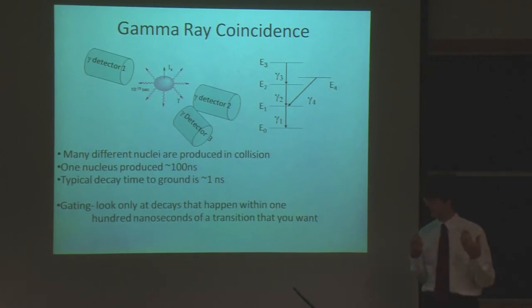What we do is something called gating. So if we look only at a decay that happens within 100 nanoseconds of a decay that we know we want. So if we know we have an energy level like this, we'll say only show me gamma rays that happen within 100 nanoseconds of this. So then that will include all the decays before, but it will exclude the decays from a different nucleus.